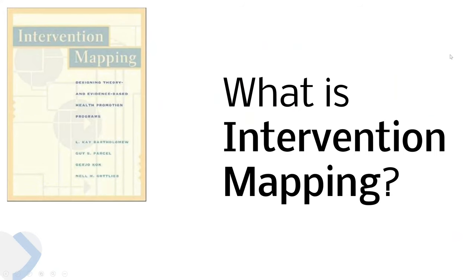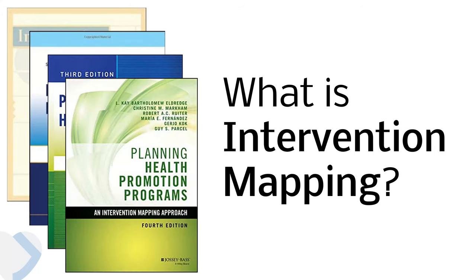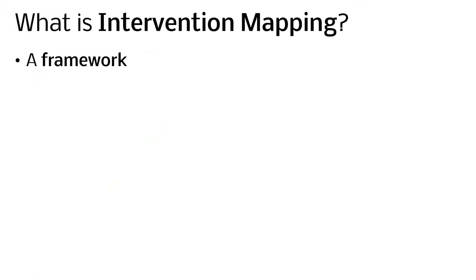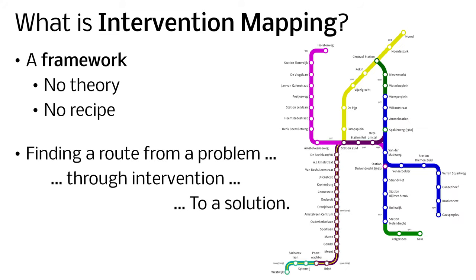Intervention mapping is originally a book — it's been around for about 25 years now. The first book was from the end of the 90s, and now we are up to edition four. It's a framework, not actually a theory. It's kind of like a protocol, but it's not like a checklist of things to do. It basically helps you to make sense of complexity. If you have a problem that involves humans, intervention mapping can help you get an overview of everything that's important, figure out what you want to focus on, and think about how to solve the problem. It also introduces a lot of vocabulary that makes it easier to talk to each other about how to approach such problems and about how to think about behavior change.